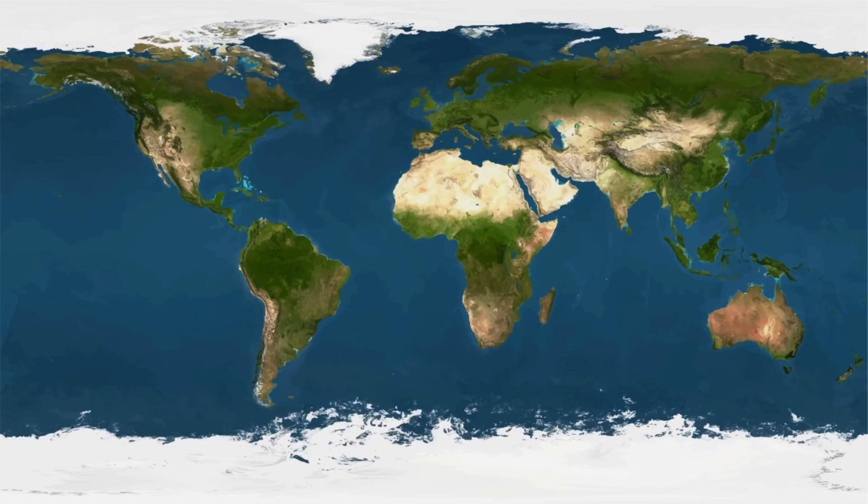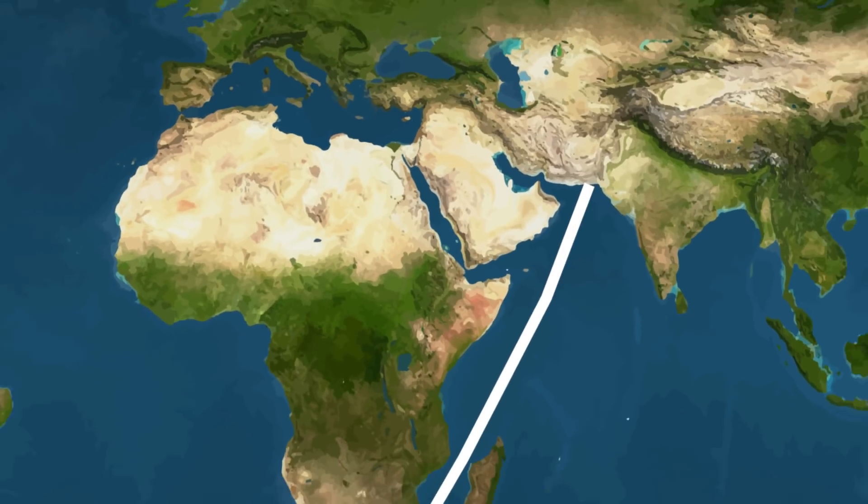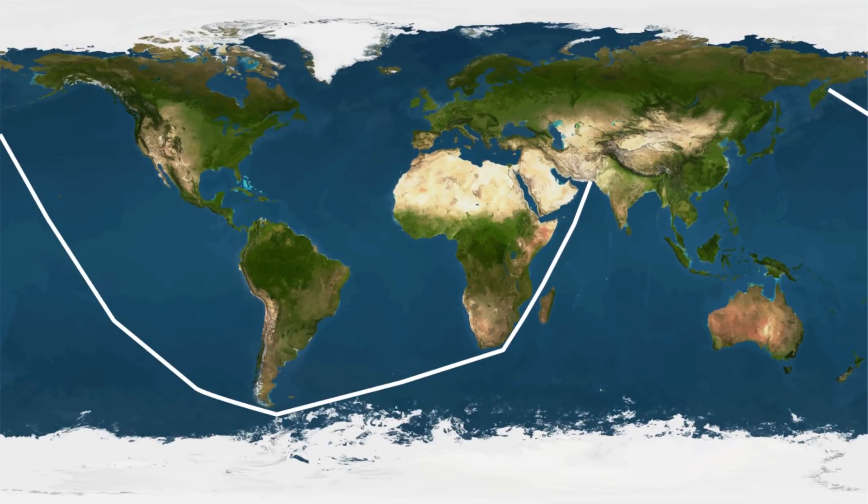As a matter of fact, this is the longest straight line path one can sail without hitting land, and it goes from Pakistan to Russia's Kamchatka Peninsula. Well, you might say this is not a straight line.